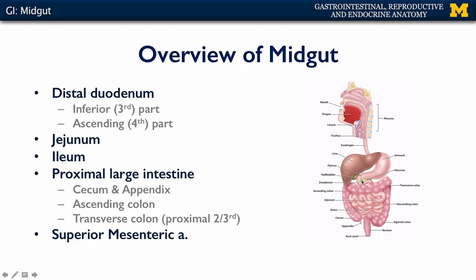The division between the foregut and the midgut is between the second and third parts of the duodenum. So we have the third and fourth parts of the duodenum, then the jejunum, the ileum, the cecum and vermiform appendix, the ascending colon, and two-thirds of the way along the transverse colon before we break into the hindgut. The midgut is served by the superior mesenteric artery, or the SMA for short.